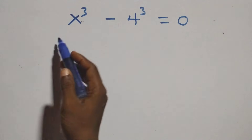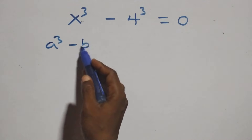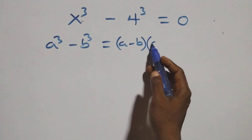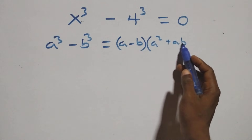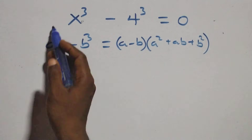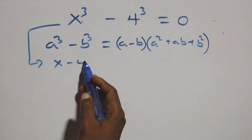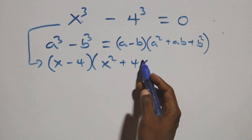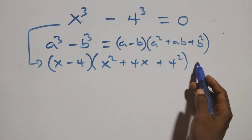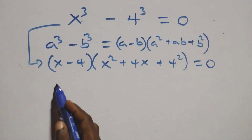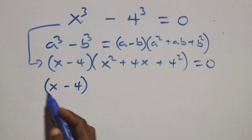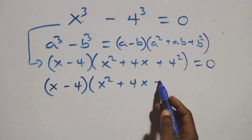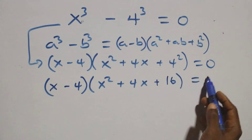Now solving for the second case: a³ minus b³ is the same as (a - b)(a² + ab + b²). This becomes (x - 4)(x² + 4x + 4²) equals to 0, which is the same as (x - 4)(x² + 4x + 16) equals to 0.